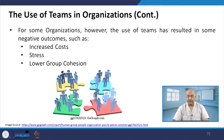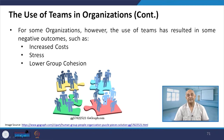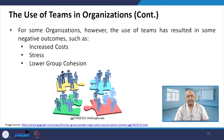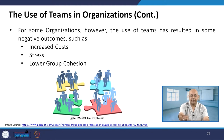For some organizations, however, the use of teams has resulted in negative outcomes such as increased cost, increased stress, and lower group cohesion. The use of teams can be negative if it increases costs, or if people are not working together — with daily conflicts, complaints, and inquiries — leading to stress and lower group cohesion, where people do not have any cohesion amongst themselves.